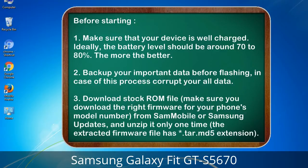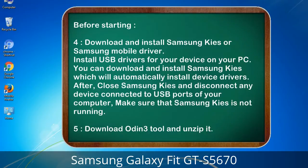3. Download the stock ROM file. Make sure you download the right firmware for your phone's model number from Sammobile or Samsung Updates, and unzip it only one time. The extracted firmware file has a *.tar.md5 extension. 4. Download and install Samsung KIS or Samsung mobile driver to install USB drivers for your device on your PC. Samsung KIS will automatically install device drivers. After, close Samsung KIS and disconnect any device connected to USB ports of your computer — make sure Samsung KIS is not running. 5. Download Odin 3 tool and unzip it.